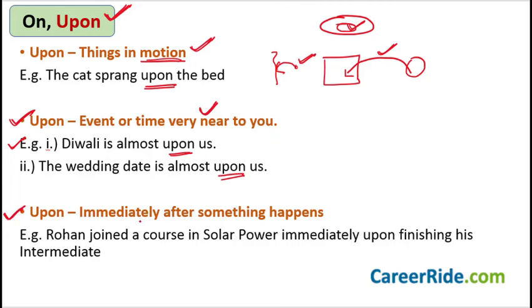Whenever something happens immediately after something else, we use 'upon.' For example: 'Rohan joined a course in solar power immediately upon finishing his intermediate' — meaning Rohan finished his intermediate and immediately joined the solar power course with no gap between the two things. So whenever you finish something and something next immediately happens, you say 'immediately upon.'